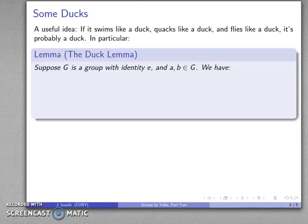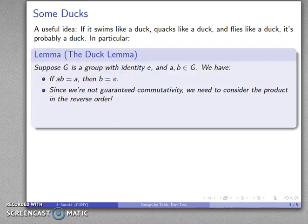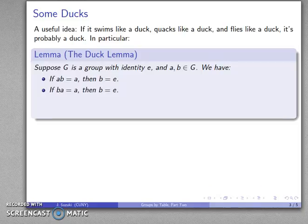Suppose I have a group with identity E, and I have two elements in that group. Then if AB equals A — if A times B is equal to A — well, B looks a lot like the identity element. It turns out it is. And again, since we're not guaranteed commutativity, we have to consider the product in the reverse order. If BA equals E, then B again looks like the identity element.